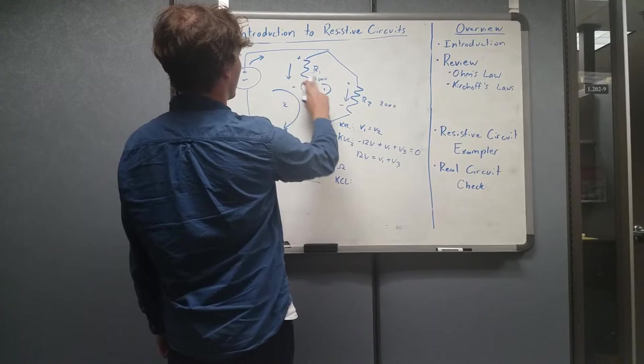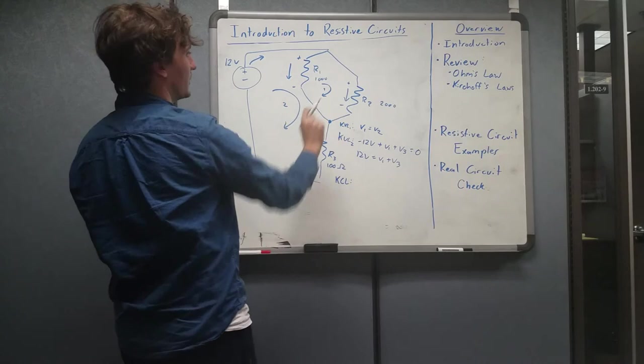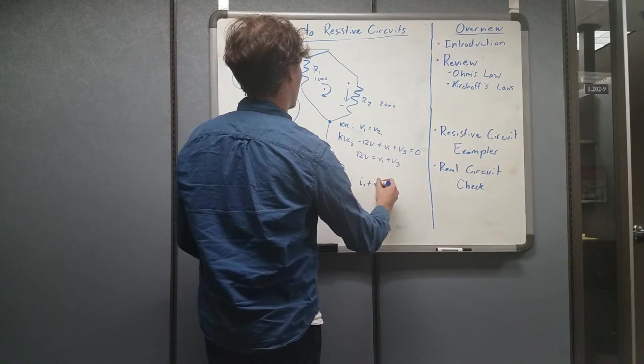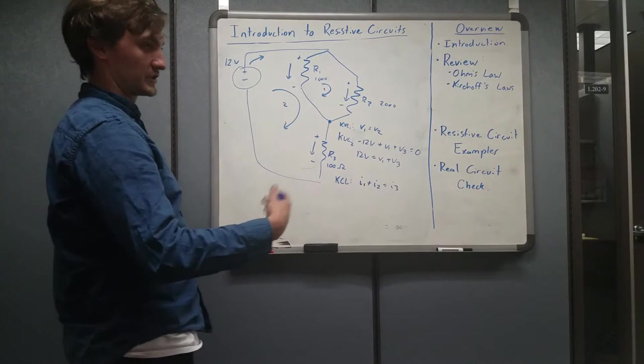And that's, we're going to analyze this node. So we have a current, remember the conventions we've established and adhered to. So we have a current heading through R1, we have a current heading through R2, and we have a current heading through R3. But in respect to the node, 1 and 2 are heading into it, 3 is heading out of it. Therefore, we have I1 plus I2 is equal to I3. I went ahead and simplified. Please work it out if you need to.